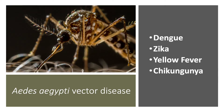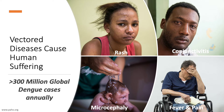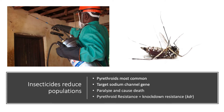Females require blood meals for their eggs to mature, and through their feeding they can spread viruses that cause disease. These include dengue, Zika, yellow fever, and chikungunya. These vectored diseases cause a lot of human suffering. Every year there are more than 300 million cases of dengue globally. To reduce these diseases, we try to reduce the size of the mosquito population. We use insecticides to do this.